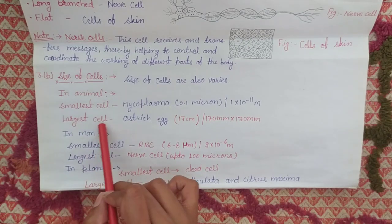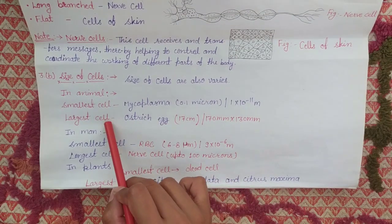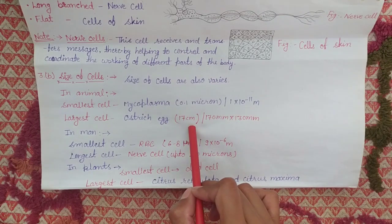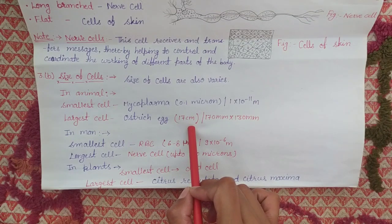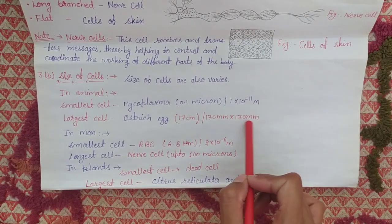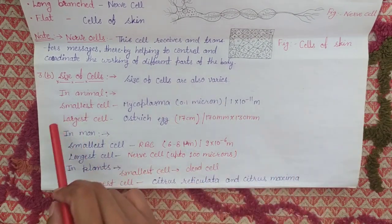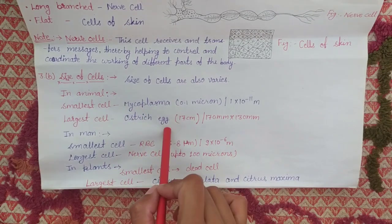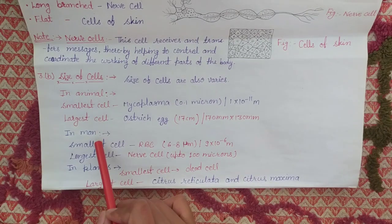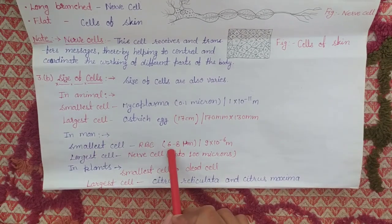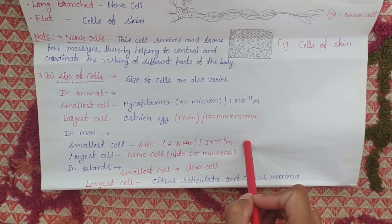Next you will see the largest cell. The largest cell is the ostrich egg. The ostrich egg cell is the largest cell in the world. Its length is seventeen centimeters, which can also be written as 170 mm × 130 mm. In human beings, the smallest cell is the RBC, whose size is six to eight micrometers, or 9 × 10⁻⁶ meters.